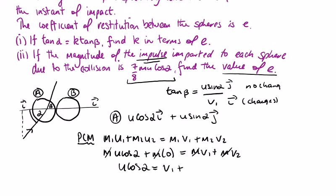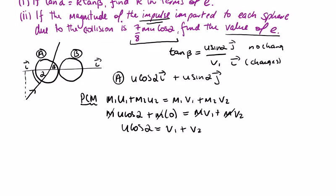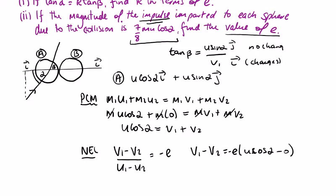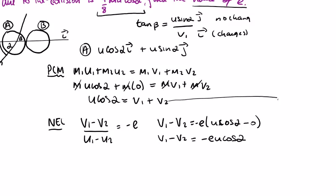Newton's experimental law will enable me to solve for v1 and v2. v1 minus v2 over u1 minus u2 equals negative e. So v1 minus v2 equals negative e u cos alpha. There will be a minus zero in there which you don't really need. So v1 minus v2 equals negative e u cos alpha.